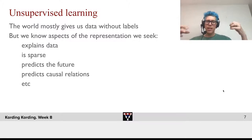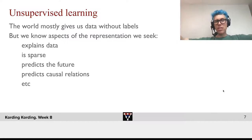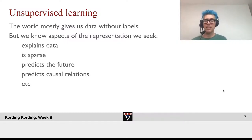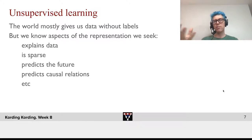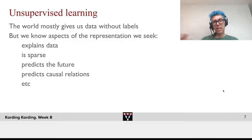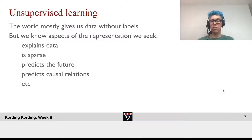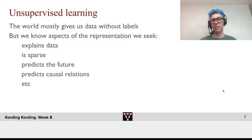What do we know? We want the representation we have to somehow explain the data that comes in, and much about VAEs that we will talk about today is about that. We might also believe that the right representation is sparse, whereas wrong representations will be less sparse. We might believe that the representation should be able to tell us something about the future, or even about the causal structure in the world. This is the domain of unsupervised learning.